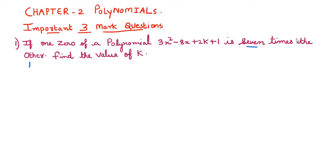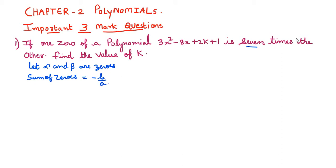For the solution, let alpha and beta be the zeros of this polynomial. The question gives one condition: one root, let it be alpha, is equal to 7 times the other, meaning alpha equals 7 beta.